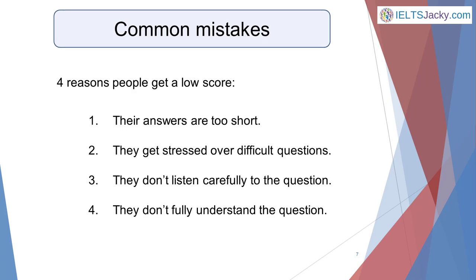Now let's look at the common mistakes many candidates make which prevent them from scoring highly. There are four main reasons why people often get a lower score than they expect or are capable of achieving. These are: one, their answers are too short; two, they get stressed over difficult questions; three, they don't listen carefully to the question; and four, they don't fully understand the question. I'll go through them one by one.